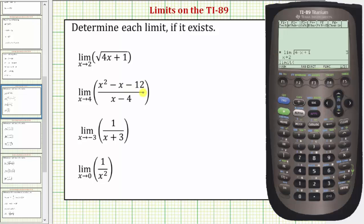And now we'll enter the function. We do need a set of parentheses around the numerator and denominator to enter this correctly. So we'll have an open parenthesis for the numerator, and then x raised to the power of two minus x minus 12, close parenthesis, divided by, open parenthesis, then we have x minus four.